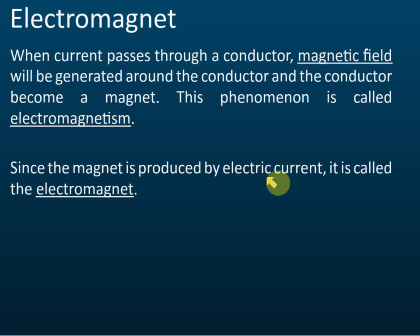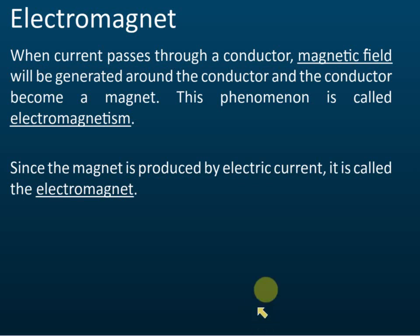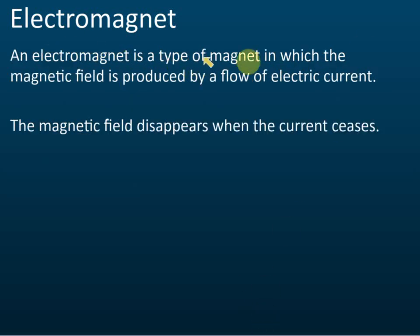Since the magnet is produced by electric current, we call it an electromagnet. There are two types of magnet. One is called a permanent magnet — whether there's a current or no current, it is always a magnet. The other is called an electromagnet: when there's a current flow it's a magnet, and when there's no current flow, it's not a magnet.